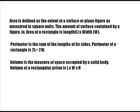The perimeter is the sum of the lengths of its sides. Perimeter of a rectangle is 2L plus 2W. And volume is the measure of space occupied by a solid body. Volume of a rectangular prism is length times width times height, or L times W times H.